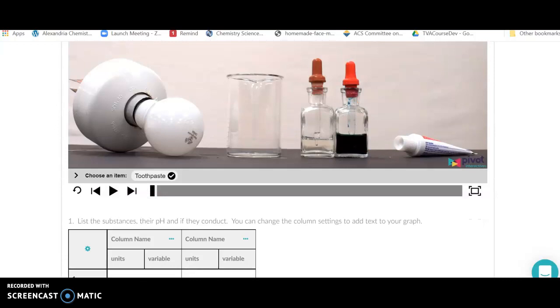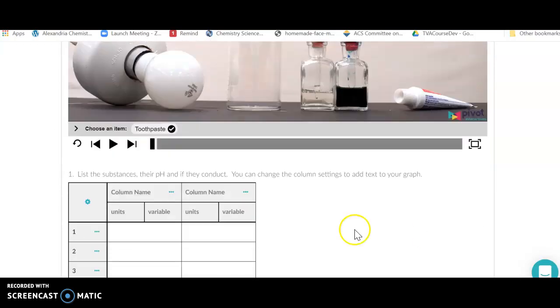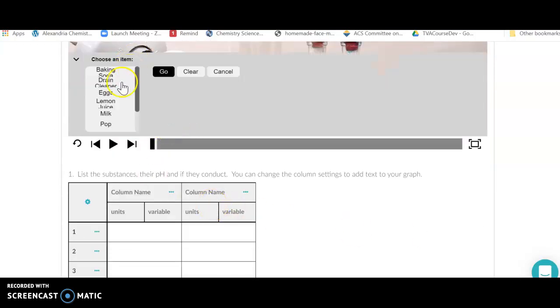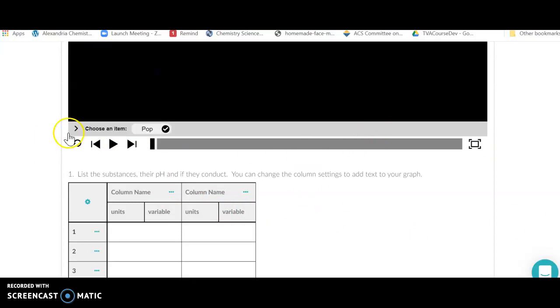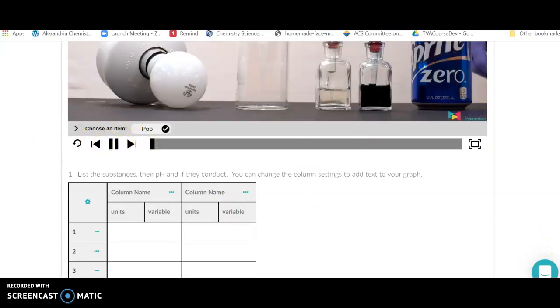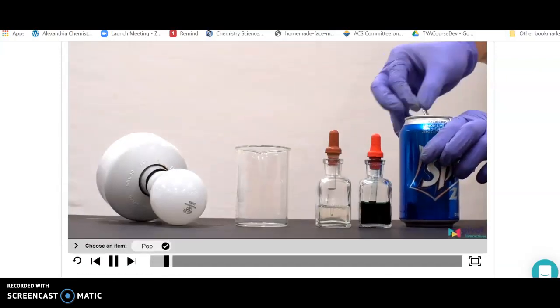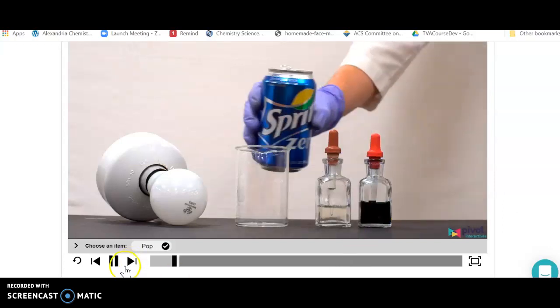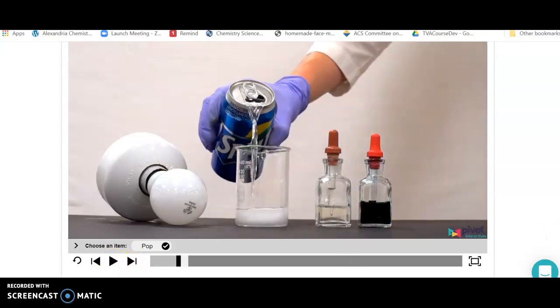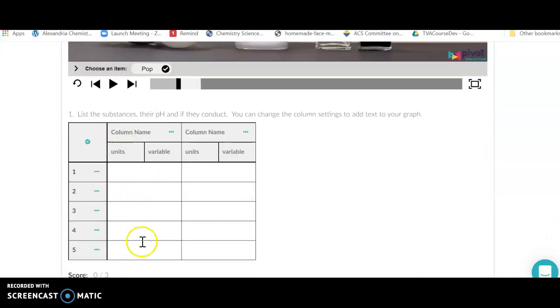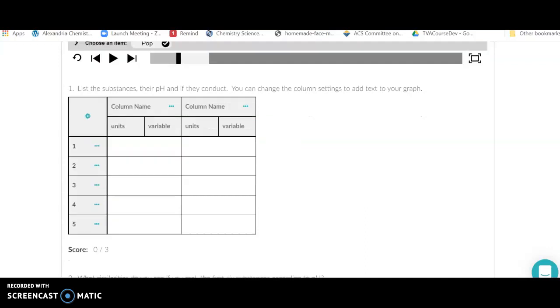The next one is we're going to look at some other substances, and we're going to use our indicators and test different substances. Now there's a whole bunch here. For example, you can do soda or pop, whatever you call it from the part of the world where you come from. So here we've got some sprite and they're going to pour it in and test its properties. Your job here is to go down and create a table such that you list the substance, its pH, and whether or not the solutions conduct.